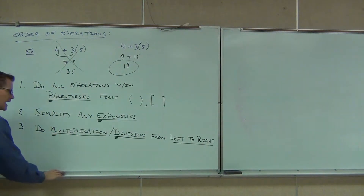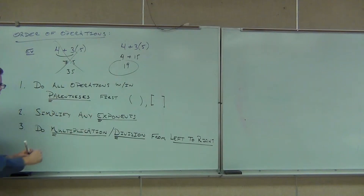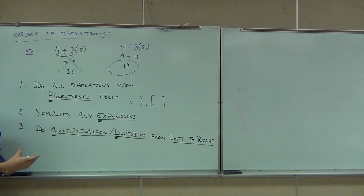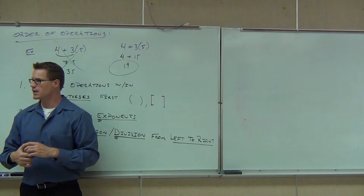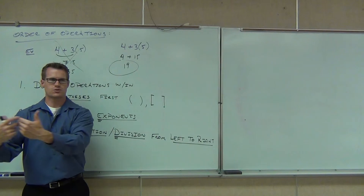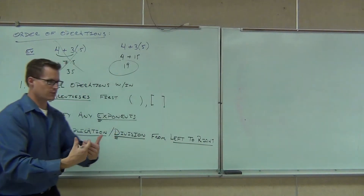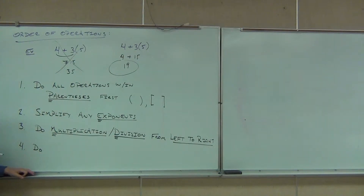Last step: after you've done parentheses, exponents, and all multiplication and division, the only thing left in your problem is addition and subtraction. We're going to add and subtract, but addition doesn't necessarily come before subtraction. It's as they occur from left to right. We look at our problem and go from left to right doing whatever comes first between addition and subtraction. So do addition and subtraction from left to right.